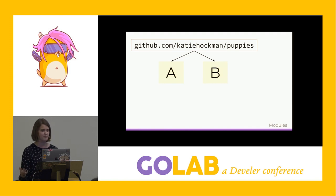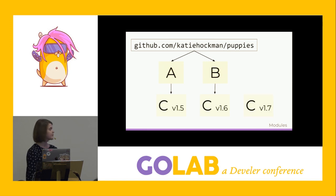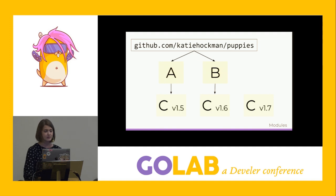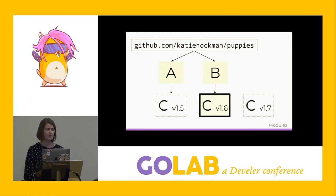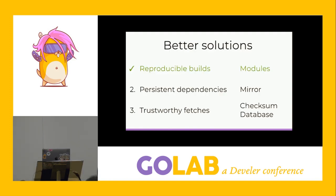By specifying that your code relies on version 1.4.1, you guarantee that everyone who imports your package will never use a version older than 1.4.1. The go command does this through something called minimal version selection. For example, if module A requires at least version 1.5 of C, and module B requires at least 1.6 of C, and C has also published 1.7 — the go command chooses the minimum version satisfying both constraints, which is 1.6. This guarantees reproducible builds because the go command uses the oldest allowed version instead of a new one that may change from day to day.